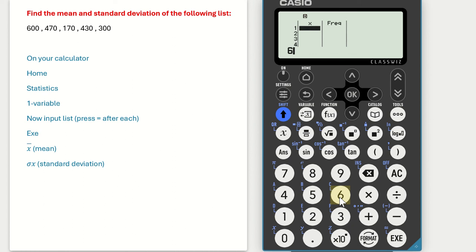I'm selecting 600. Press equals after each input. So 470, you must press equals, 170 equals, 430 equals, 300 equals.